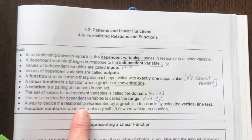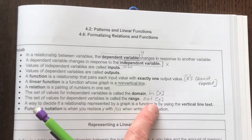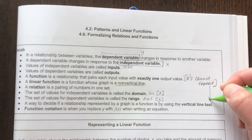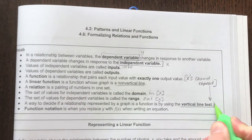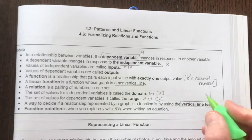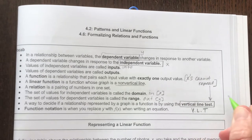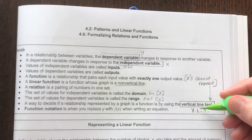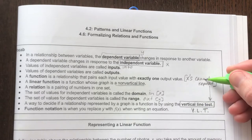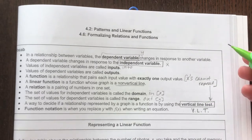Now, a way to decide if a relationship represented by a graph is a function, so how you can tell if the x's repeat on a graph, visually, is something called your vertical line test. Now, if the vertical line passes through your function more than once, that means your x values repeat, and you do not have a function.